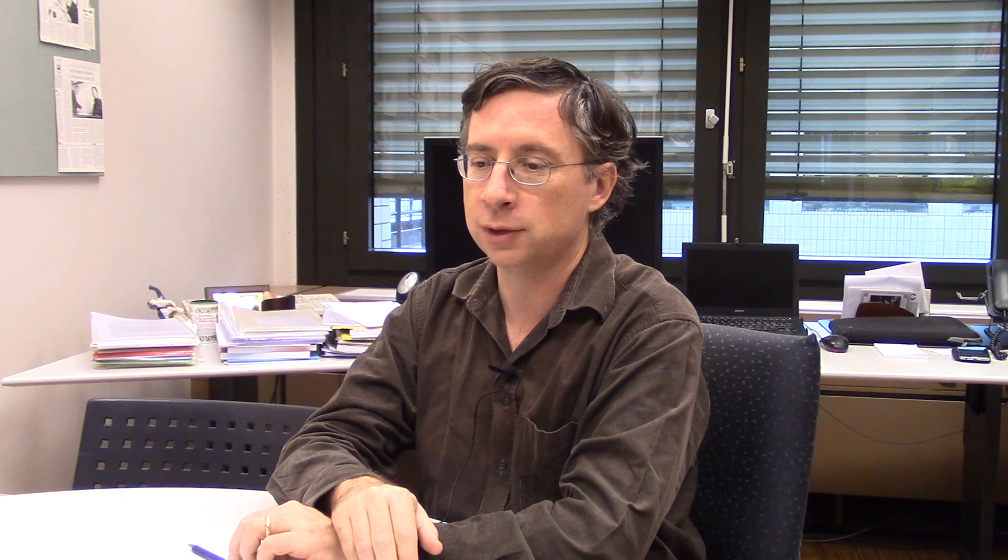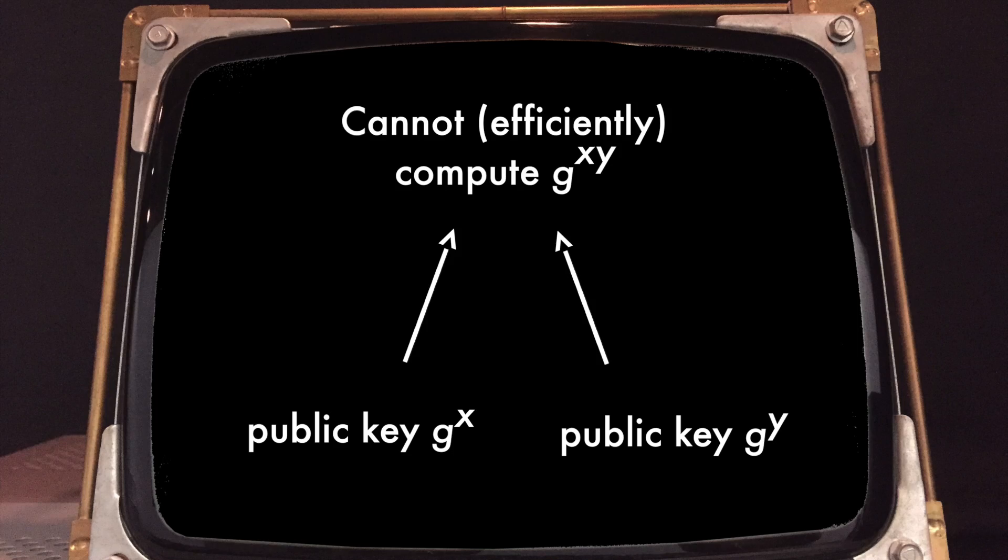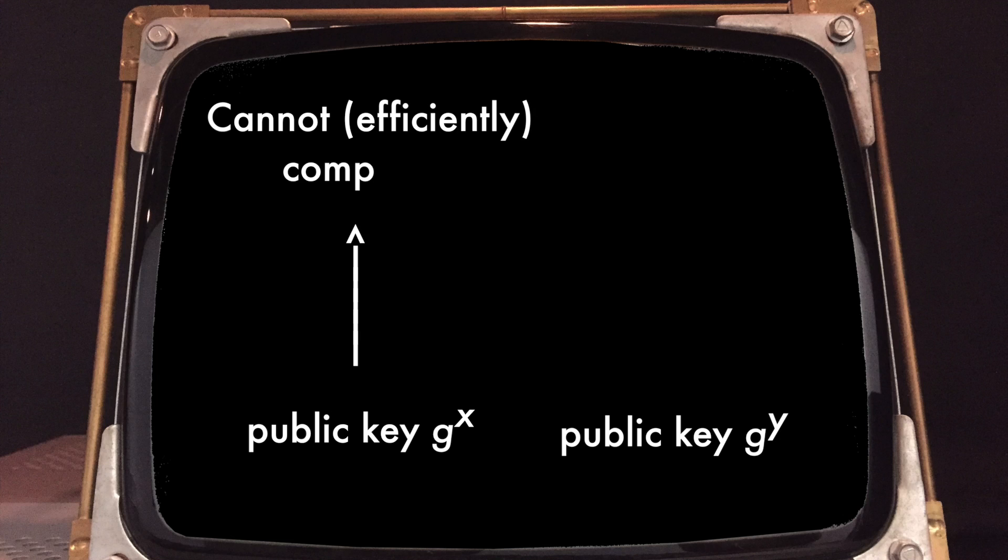It is a secret because if we assume that an adversary who sees the communications, who sees the public keys G to the X and G to the Y, he cannot deduce G to the XY. In particular, computer scientists believe that it is not feasible to retrieve the value of X given G to the power X. That's a notion of a one-way function.